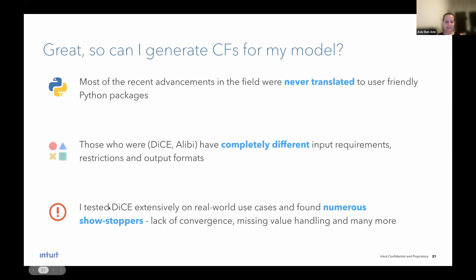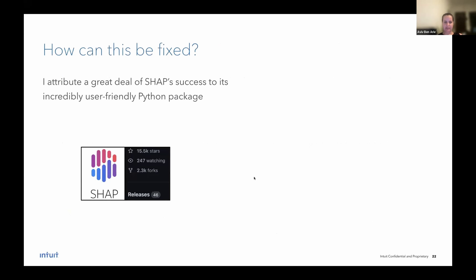Specifically, I tested dice on my real world use cases, and I found numerous showstoppers, which made me not be able to use it. For 25% of my false positives, the package never converged, meaning I never got an explanation. Their missing values are not handled. And as I use XGBoost, I have a lot of missing values in my data, and many more.